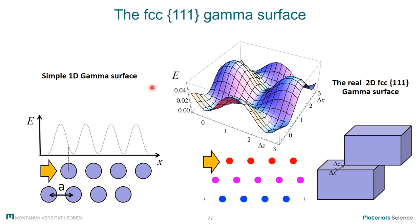One can also apply the Peierls-Nabarro model to this more complex 2D case. I mentioned last time there are extensions to the Peierls-Nabarro model for 2D — this has been done, for example, by Schoeck. I will not go into all the details, but will show the most essential things about dislocation structure and a few results obtained with other atomistic methods.